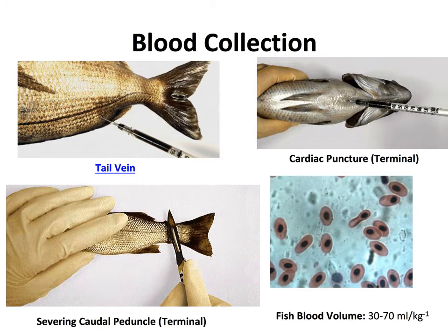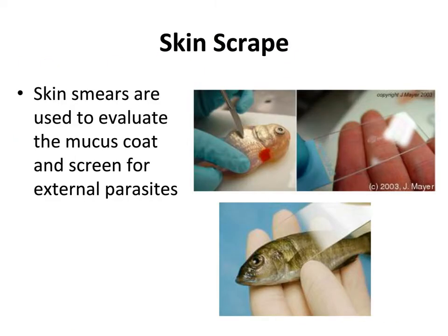Blood collection is commonly done in the veterinary clinic to assess health status, and we can do it on fishes. The tail vein is the best vein to use — go in at an oblique angle with a small syringe between the anal fin and caudal fin, fish around until you hit the spine, and right underneath the spine should be a large vein to draw blood from. For scientific studies, we often need to get as much blood as possible. Fish have very small blood volumes — on the order of 30 to 70 milligrams per kilogram — so we may need to exsanguinate the fish entirely to do something like a hormone assay. Also note that fish have nucleated red blood cells.